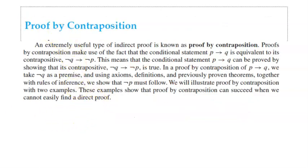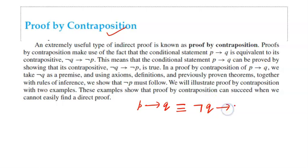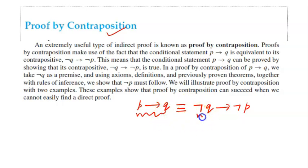Next we are going to discuss proof by contraposition, which people can get slightly confused with. If I have to prove the statement P implies Q, we have seen in earlier videos that P implies Q is equivalent to its contraposition: negation of Q implies negation of P. So instead of proving P implies Q directly, I can start with the negation of Q and then show that the negation of P is true. This proof strategy is known as proof by contraposition.